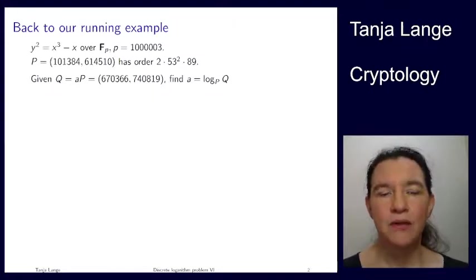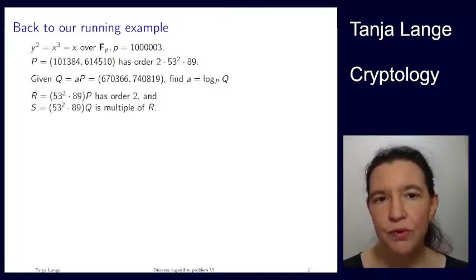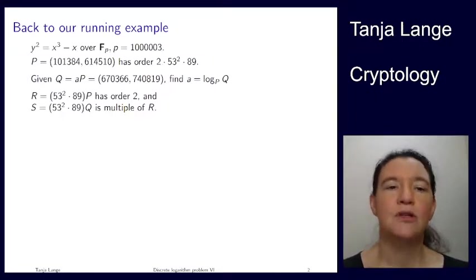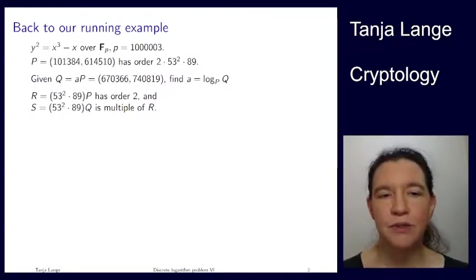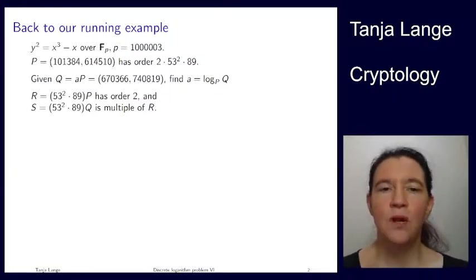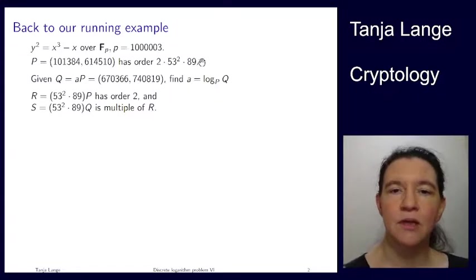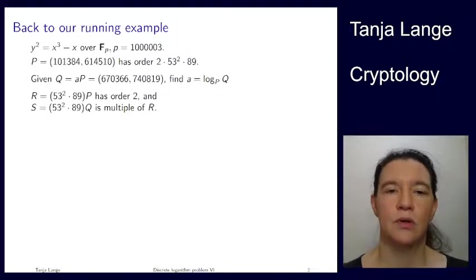And now let me show you some facts about these points. I'm going to use that the group order has all these factors. So, if I'm taking some multiples, computing R = (53² × 89)P. Well, if P has order this whole product, then what is missing there is this 2. Well, by the definition of order, this point R has order 2.